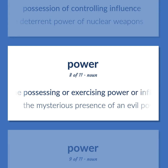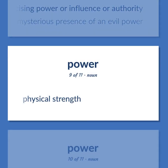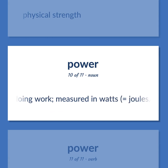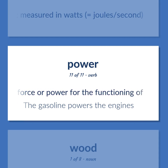Power: possession of the qualities, especially mental qualities, required to do something or get something done — danger heightened his powers of discrimination. Possession of controlling influence — the deterrent power of nuclear weapons. One possessing or exercising power or influence or authority — the mysterious presence of an evil power. Physical strength. Physics: the rate of doing work, measured in watts, equals joule per second. Supply the force or power for the functioning of — the gasoline powers the engines.